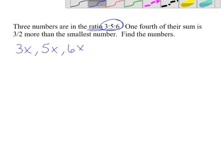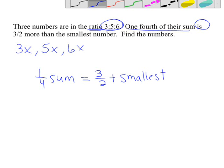One-fourth of their sum is three halves more than the smallest. I'm going to write it out in words like this first, and then I'm going to replace sum and smallest with the other pieces. The sum is when I add all of these together. So 3x plus 5x is 8x plus 6x is 14x. So one-fourth of 14x and three halves plus the smallest, and the smallest was 3x.